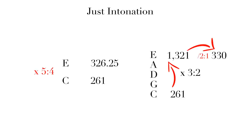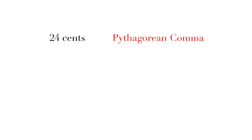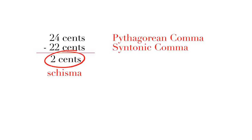We call this difference the Syntonic Comma. A note of interest, the 2 cent difference between the 24 cent Pythagorean Comma and the 22 cent Syntonic Comma is called the Schisma.